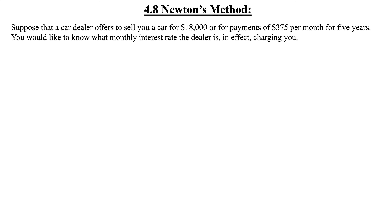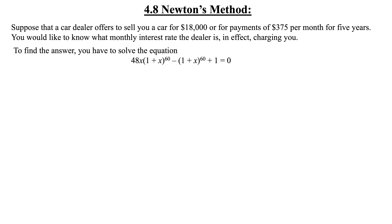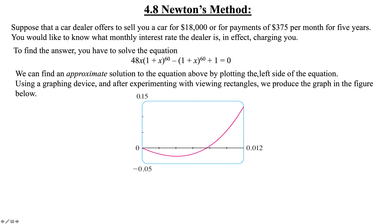Newton's method: suppose a car dealer offers to sell you a car for $18,000 or payments of $375 per month for five years. You'd like to know what monthly interest rate the dealer is charging. To find this answer you have to solve a finance equation set equal to zero, where the 60 represents 60 monthly payments for five years. That's extremely difficult, so you might consider graphing it and finding the x-intercepts.